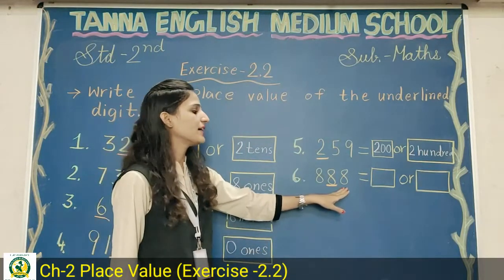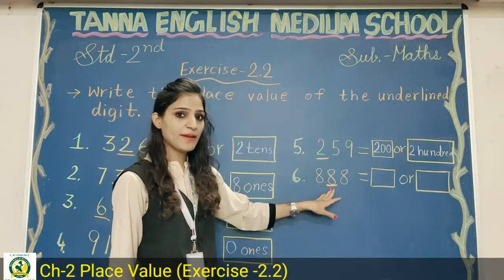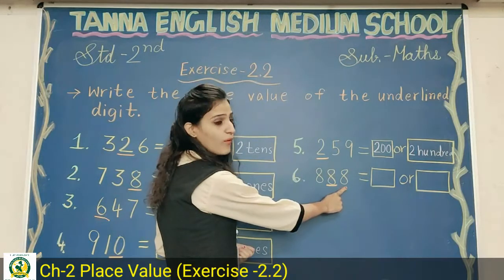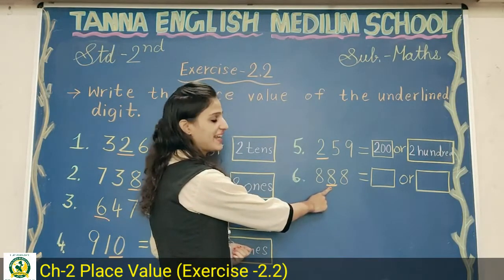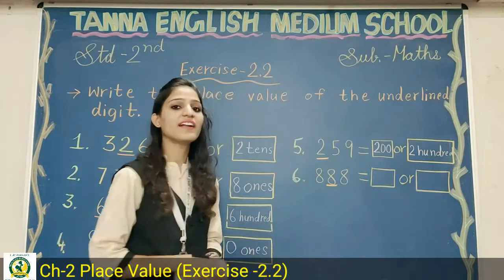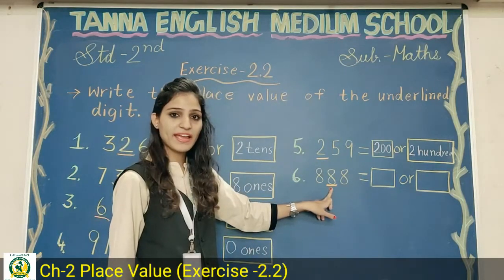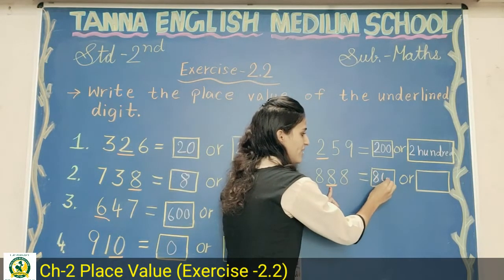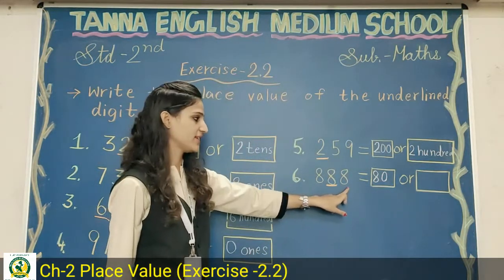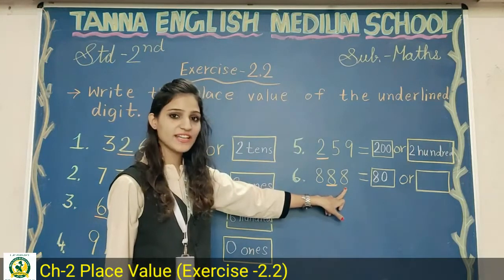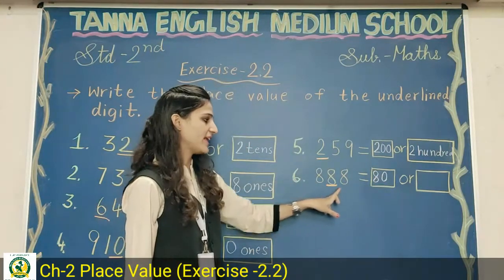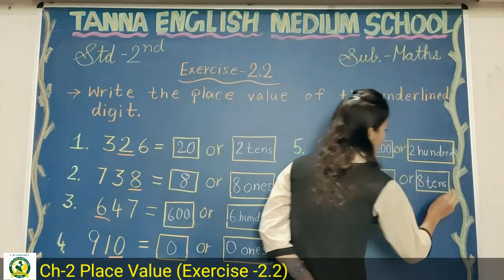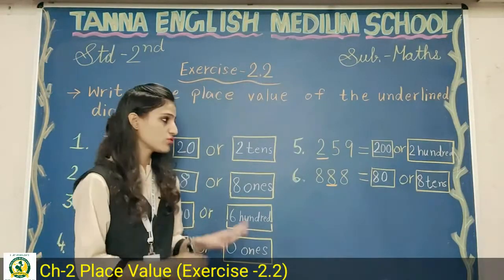Last question: eight hundred and eighty eight. Notice all three digits are eight, but each has a different place value. This eight is at ones place, this eight is at tens place, and this one is at hundreds place. The underlined eight is at tens place. Eight tens means eighty — add one zero after eight because there is one digit after it. So write eighty in the first box and 'eight tens' in the second box.